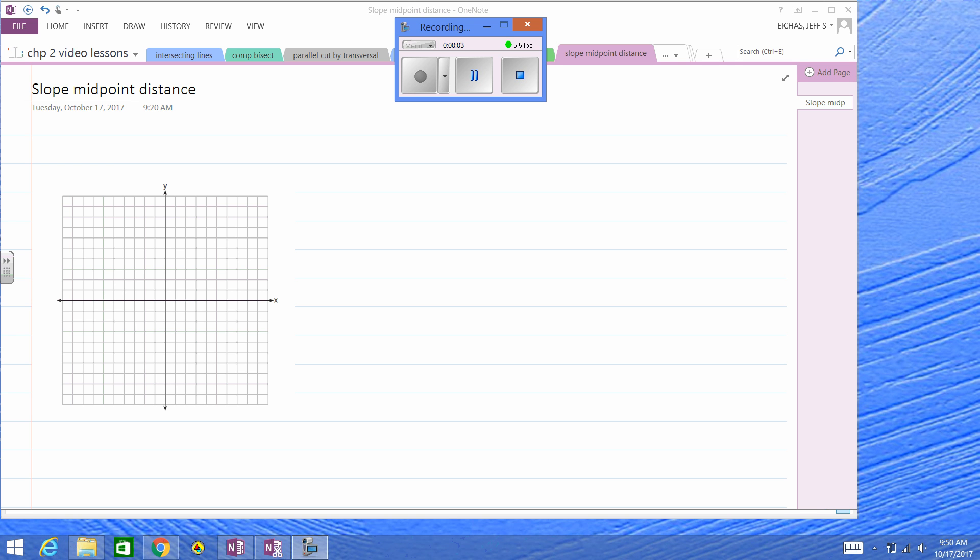Okay, so three skills we're going to need for this chapter. This is after graphing lines. We're going to work on calculating slope, then midpoint, then distance.